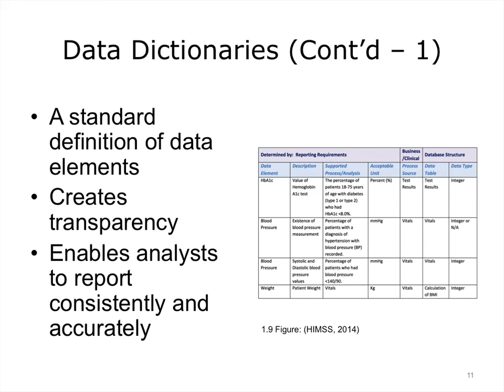A data dictionary is defined by the Health Information Management Systems Society, or HIMSS, as a standard definition of data elements. It ensures that all necessary data points are accounted for and reported correctly. It should include specific descriptions of the data element from the report requirements, an associated business or clinical process, and information from the underlying database. Documenting the source of the data, process, and database storage creates transparency to the organization and enables analysts to report consistently and accurately.